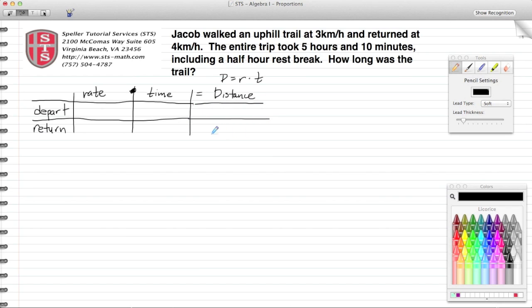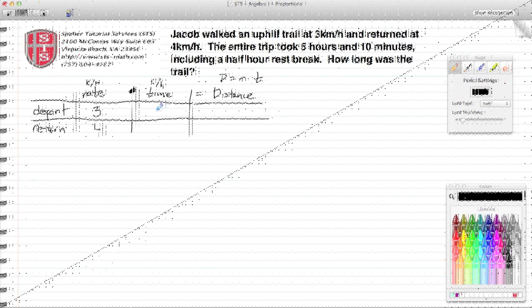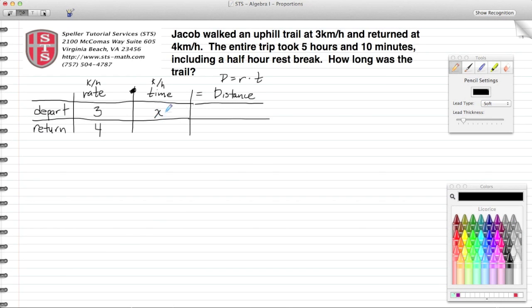Now we look back at our word problem and fill in the given information. We're told that when he departed, he departed at a rate of 3 kilometers per hour. Let me also put the rates above this so we know this is kilometers per hour. We don't know the times, we're going to leave that blank for now. We know that he returned at 4 kilometers per hour.